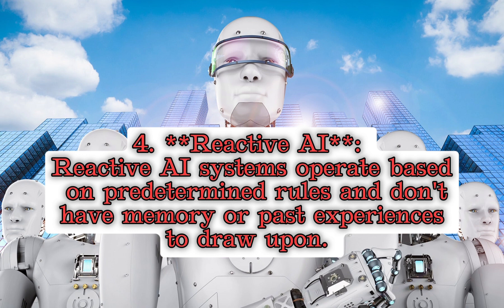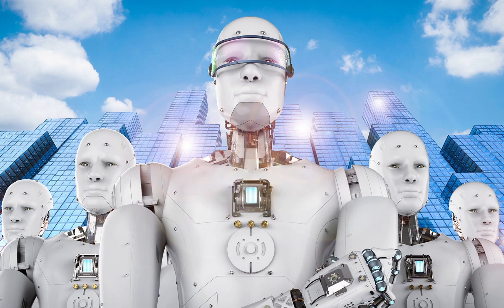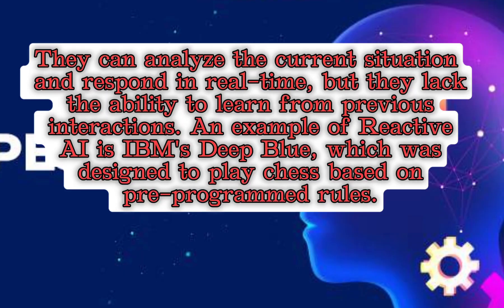4. Reactive AI: Reactive AI systems operate based on predetermined rules and don't have memory or past experiences to draw upon. They can analyze the current situation and respond in real-time, but they lack the ability to learn from previous interactions. An example of reactive AI is IBM's Deep Blue, which was designed to play chess based on preprogrammed rules.